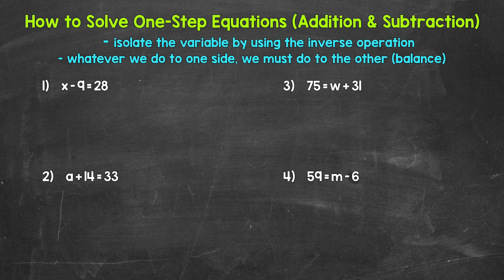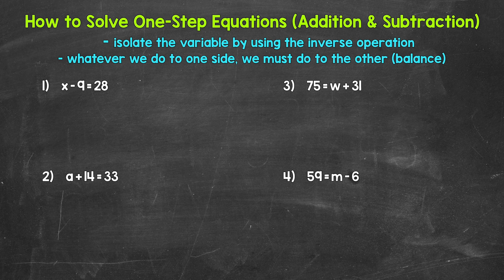Let's jump into our addition and subtraction examples, starting with number one, where we have x minus 9 equals 28. So we need to solve this equation — we need to figure out what x equals. So what minus 9 equals 28? For this example, we may be able to figure it out using mental math, but it's going to be helpful to go through the process of isolating the variable. That way we're prepared for more difficult or more complex equations.